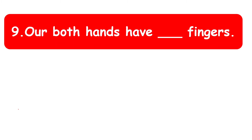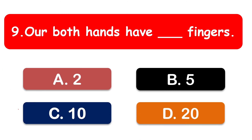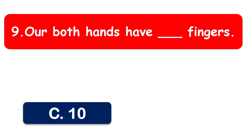Our both hands have how many fingers? In one hand we have five fingers, so in both hands we have ten fingers. The correct answer is ten fingers.